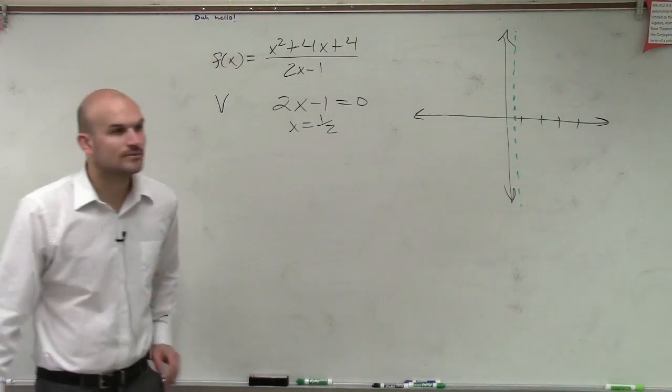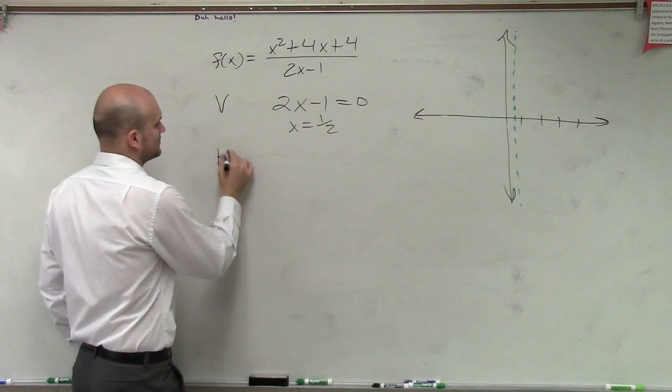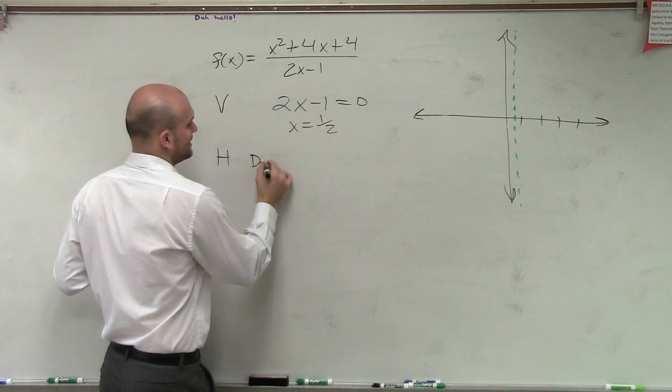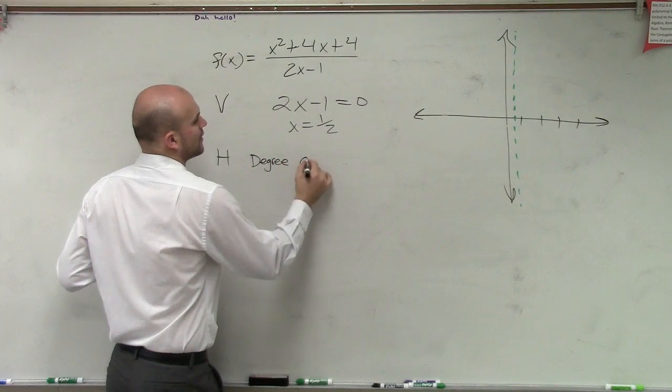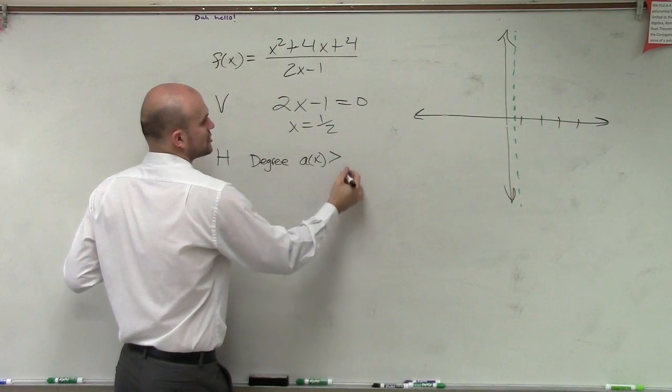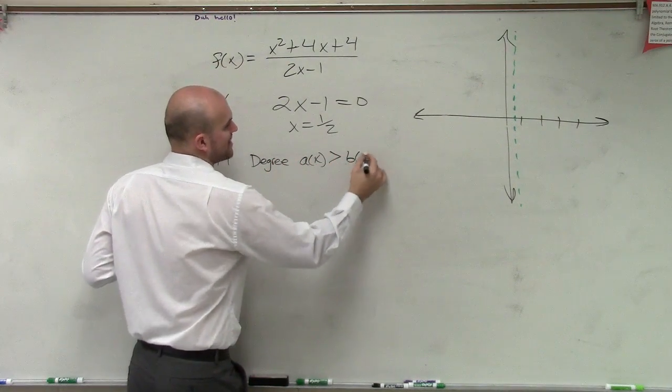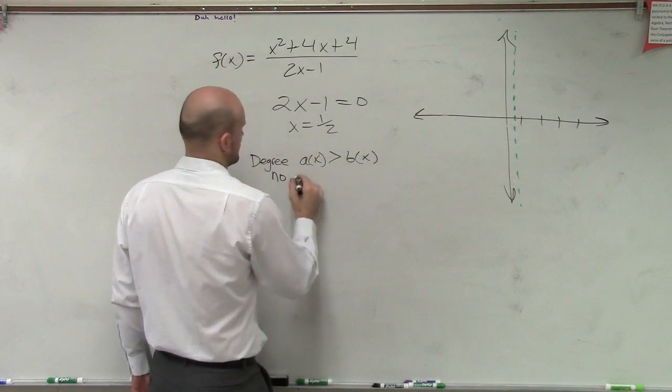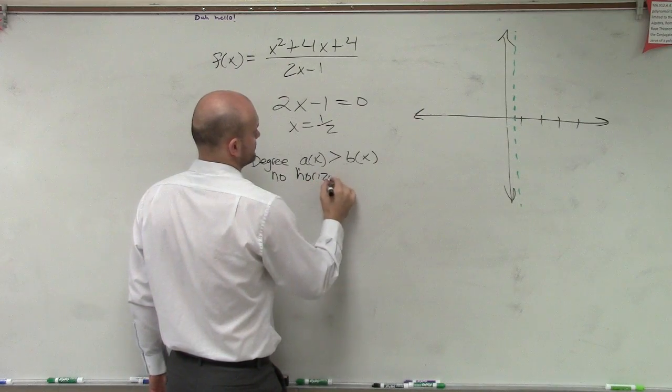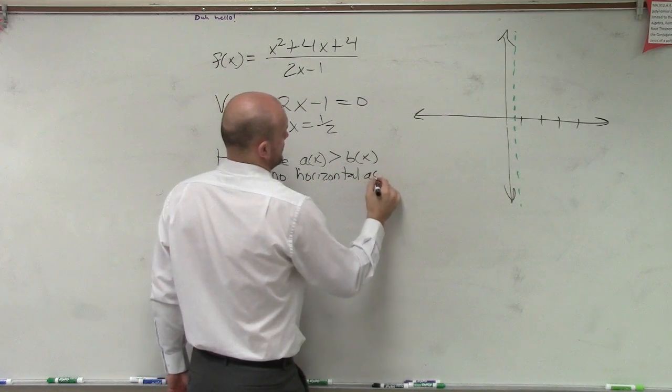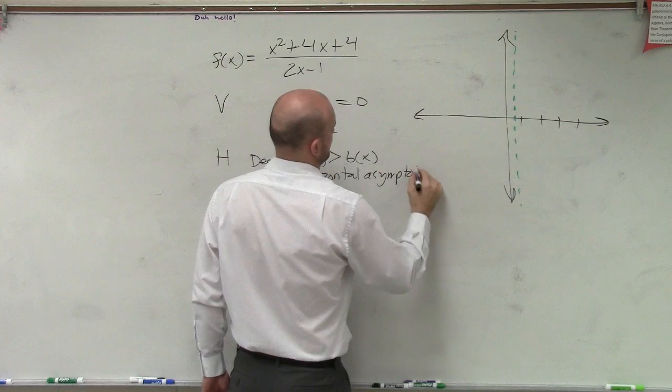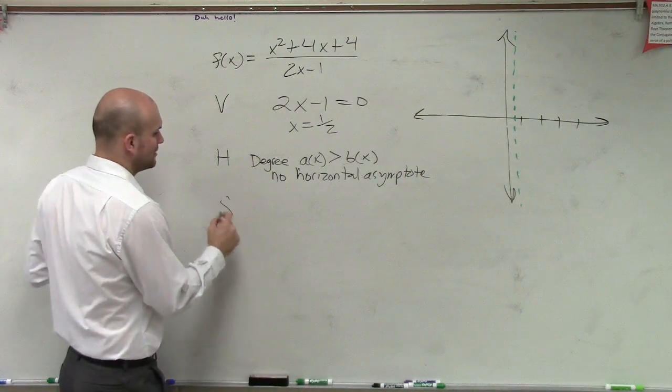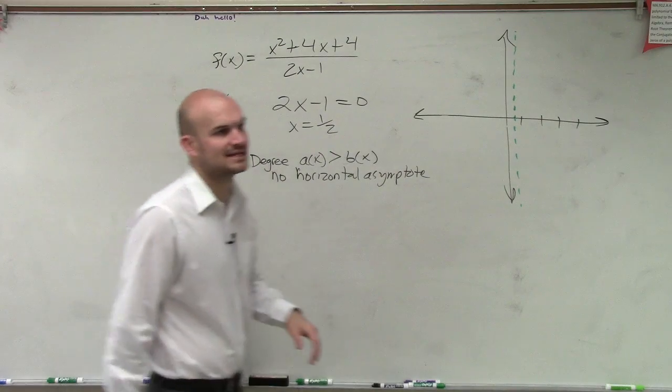All right. So now we go ahead and determine the horizontal. So what we notice is the horizontal, that our degree of our a of x function, is larger than the degree of our b of x. So therefore, there's no horizontal. Now, since there's no horizontal, now I need to look into the slant possibility.